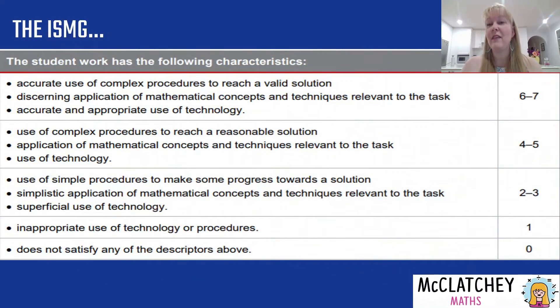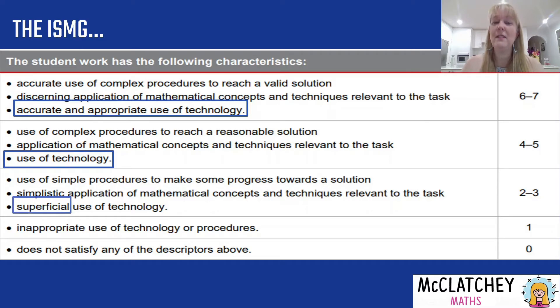Let's kick off by looking at the ISMG. This is our section for solve on our instrument-specific marking guide and we're actually interested in this section here, the accurate and appropriate use of technology. If it's done well, you can automatically get that tick in that box if you're doing what your task sheet asked of you. So it's really important to read your task sheet. We don't want to be hitting the box down underneath or superficial use of technology.